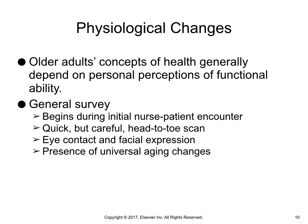Physiological changes. Older adults' concepts of health generally depend on personal perceptions of functional ability. An initial inspection reveals if eye contact and facial expression are appropriate to the situation and if universal aging changes, such as facial wrinkles, grey hair, loss of body mass in the extremities, and increase of body mass in the trunk, are present. Please review Table 14-1, Common Physiological Changes with Aging at a Glance, as a supplement to this PowerPoint.